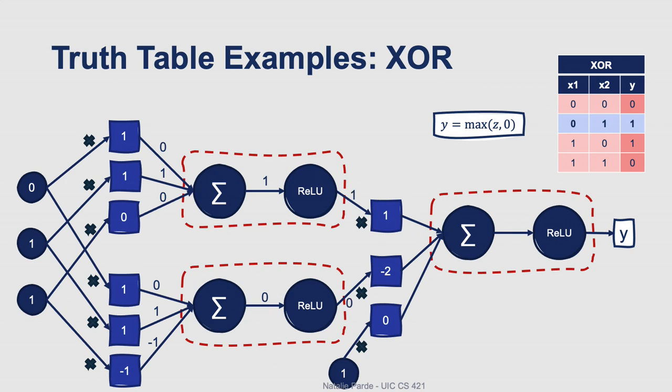Then we'll run ReLU on both of those sums, so the maximum of zero and one is going to be one for the first hidden unit, and the maximum of zero and zero is going to be zero for the second hidden unit. We'll go ahead and pass those output values of one and zero along to the next layer, which is our output layer that contains a single unit. We'll multiply our inputs to that unit by the respective weights of one, negative two, and zero, and we'll get values of one, zero, and zero. We'll sum those up and we'll get a value of one, which we'll pass into our ReLU function. The maximum of zero and one is one, so that means our output value will be one.